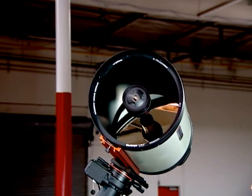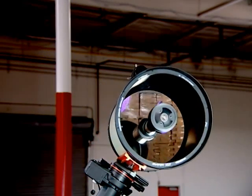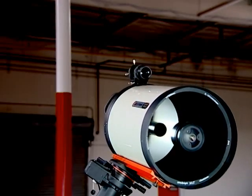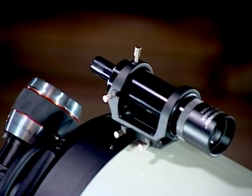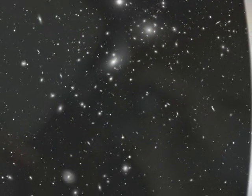Edge HD is an Aplanatic Schmidt telescope designed to produce aberration-free images across a wide field of view. Celestron engineers have designed this optical system to reduce more than just off-axis star coma, but to give an astrograph-quality flat focal plane all the way to the edge of the field of view.